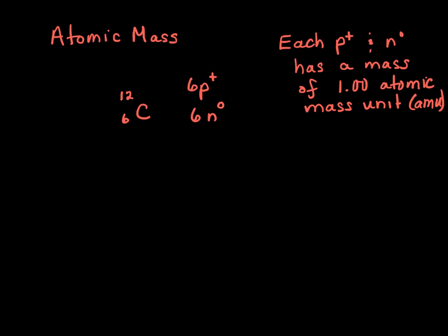Atoms are too small to weigh on a scale. So what scientists did is they started by looking at carbon-12, the isotope carbon-12, which has six protons and six neutrons. Each proton and each neutron has a mass of one atomic mass unit, or AMU. So carbon-12 has an atomic mass of 12 atomic mass units.